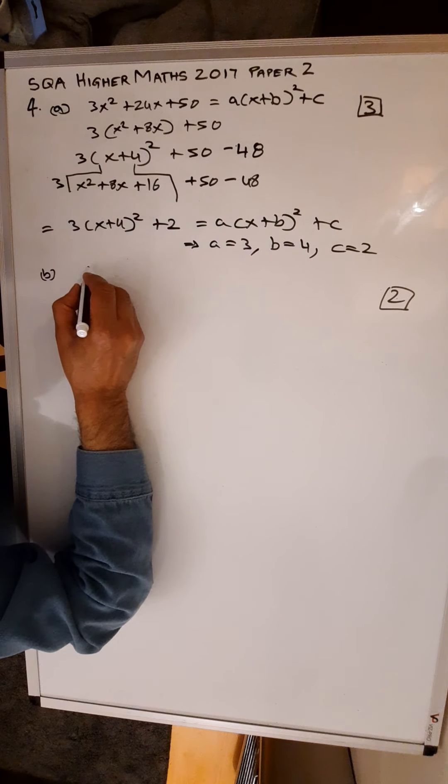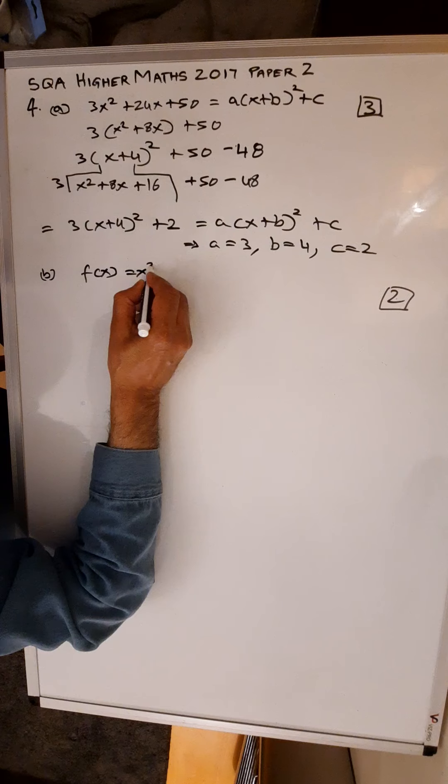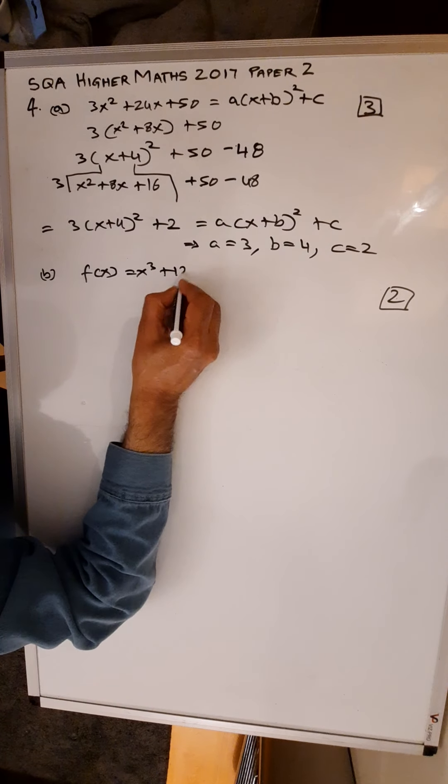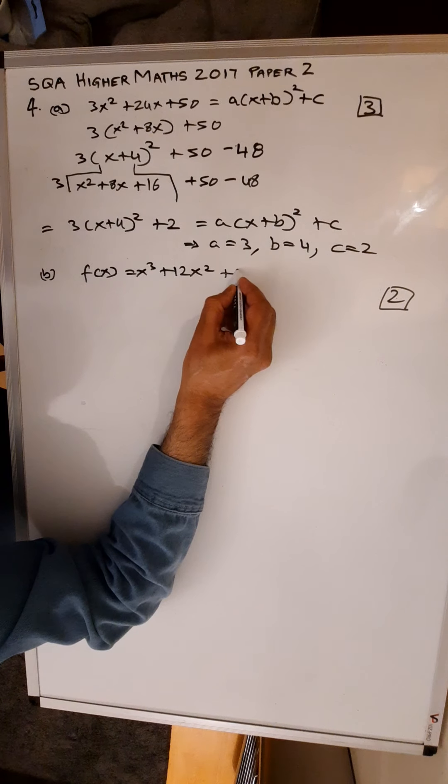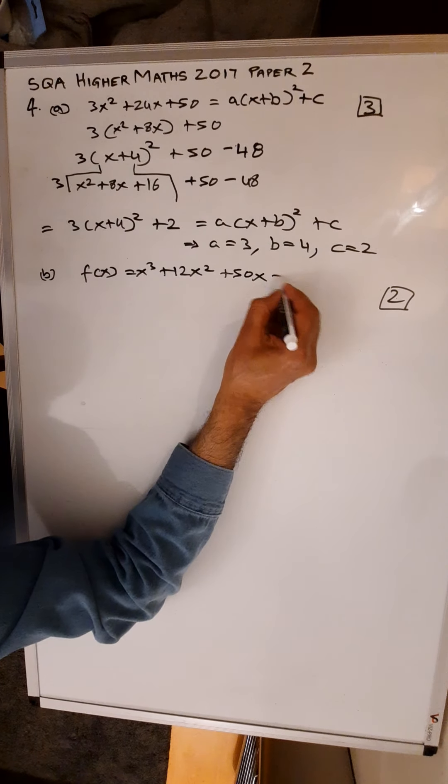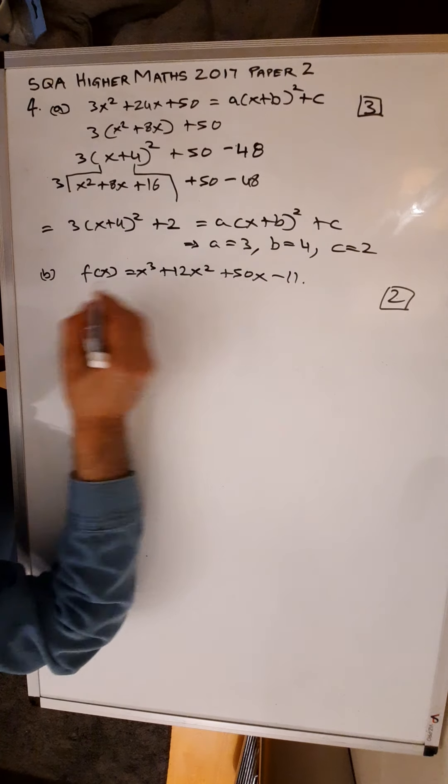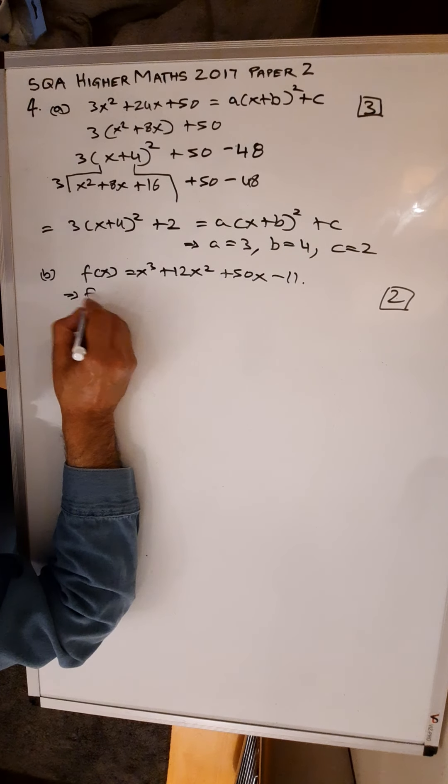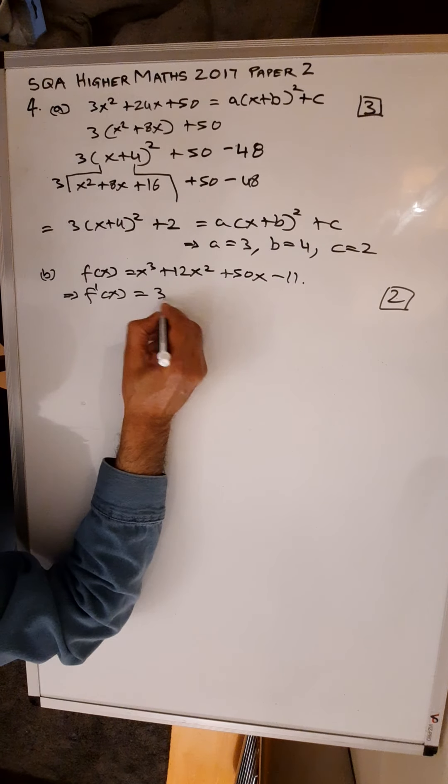Given that f(x) is equal to x cubed plus 12x squared plus 50x minus 11, find f'(x). So that means that f'(x), you're just going to differentiate. This is going to be 3x squared plus 24x plus 50.